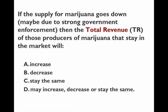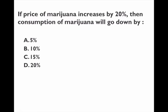On this question, apply the formula. We know the elasticity of marijuana is -0.5, so what happens when the price increases by 20%? The quantity will go down, but by how much? Since the elasticity is -0.5, it is inelastic, so quantity will go down by less than 20%.